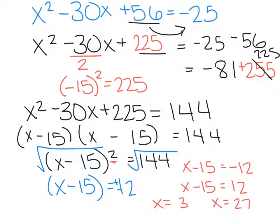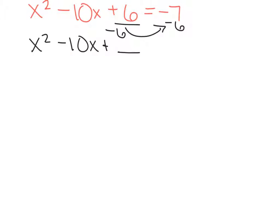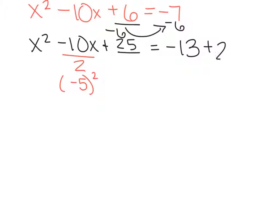For the next example, I want to try to do decimals, because I know that's what you said you struggled with the most. Here's an example — I'm going to tell you it's not going to work out perfectly like the other ones; we are going to end up with decimals or fractions in the end. So the first thing I see is I have to get my constant to the other side of the equation, so I'm going to do minus 6, minus 6. Rewrite my equation: x squared minus 10x plus whatever the square ends up being equals negative 13. To complete the square, I have to take half of b, which would be negative 5, and square it. So negative 5 squared is 25, so that means I have to add 25 to both sides of the equation. So let's rewrite it again: x squared minus 10x plus 25 equals negative 13 plus 25, which gives us 12.